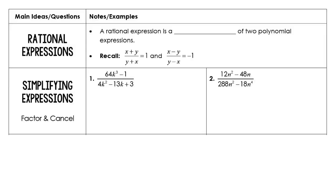In this video, we will be reviewing rational expressions. For the first part, we need to know the whole idea of a rational expression. The definition is that a rational expression is a quotient — remember, quotient is the answer to a division problem — so a rational expression is a quotient of two polynomial expressions.